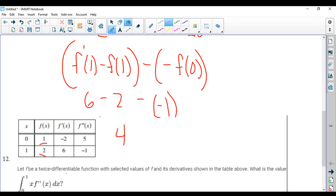So it's 6 minus 2 minus negative 1, or 5.